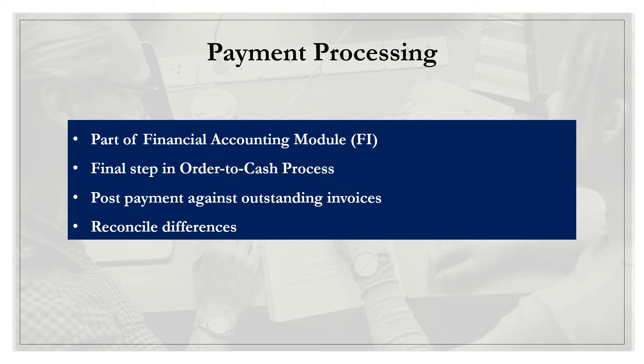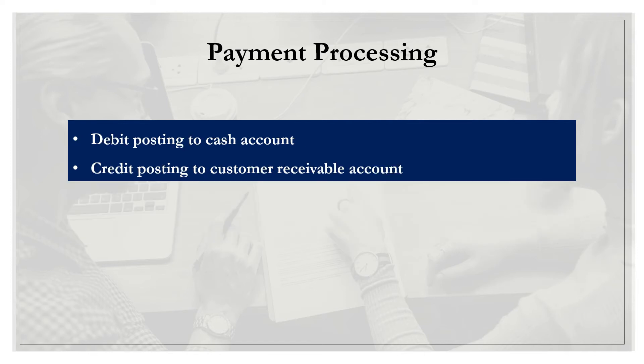We can see within sales and distribution the automation that's happening in the background throughout the entire process. This automation isn't particular just to sales and distribution — it's actually connected to every other module within the enterprise. So there's less chance of making mistakes, no redundancy, and of course it's a lot quicker and more efficient.